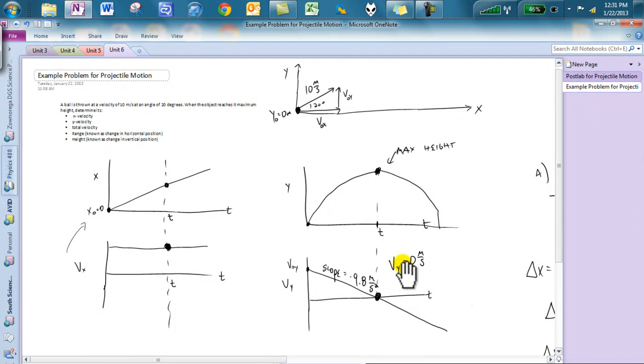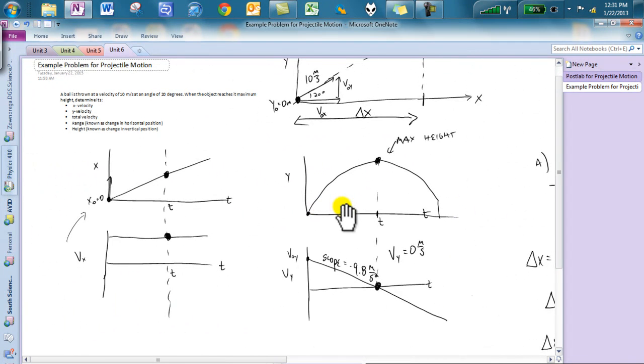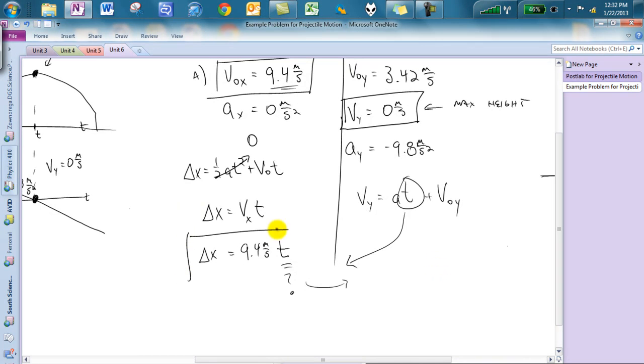And then the range and the height. Range of this thing is going to be how far has this object moved in the x direction. So as this thing flies through the air, the range would be how far has it moved here. And that would just be calculating this change in position. Or what you could do is you could calculate this area.